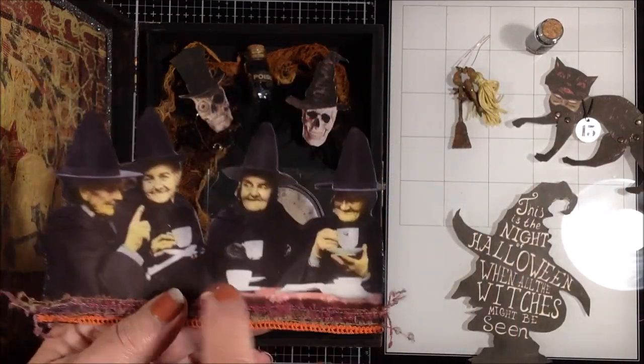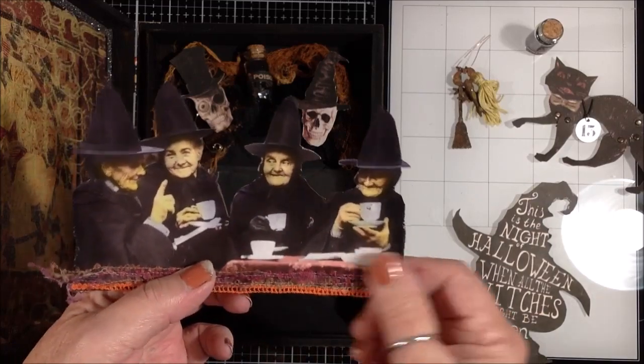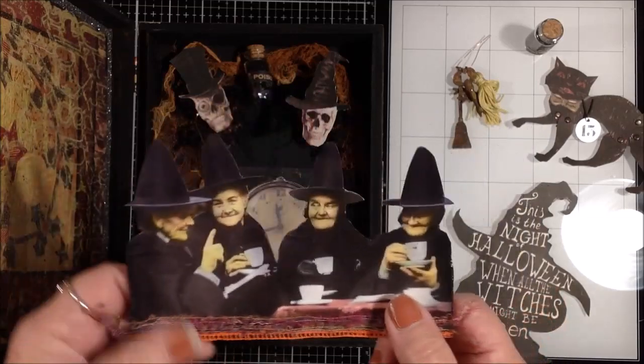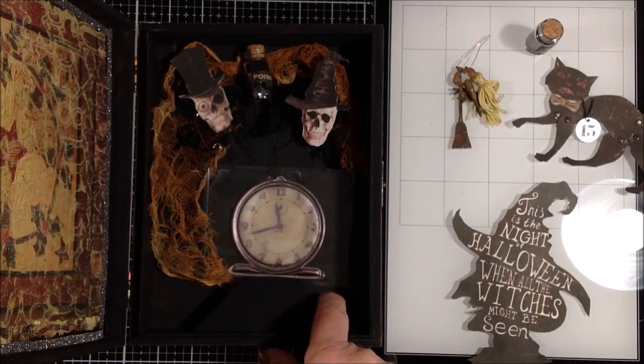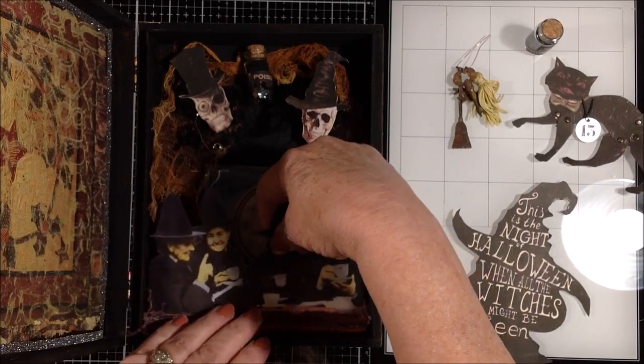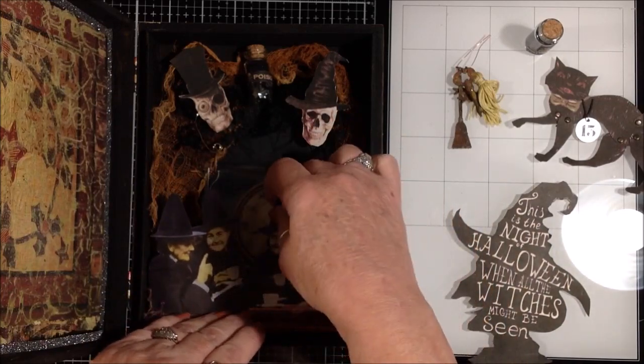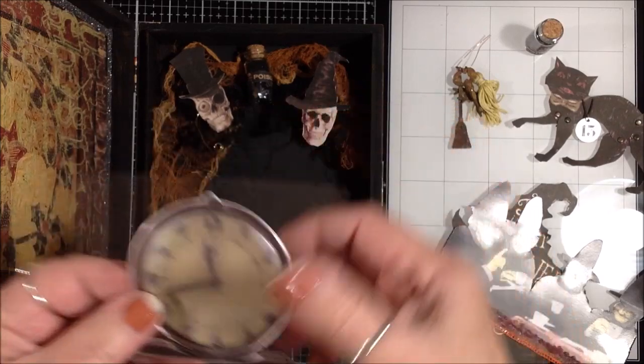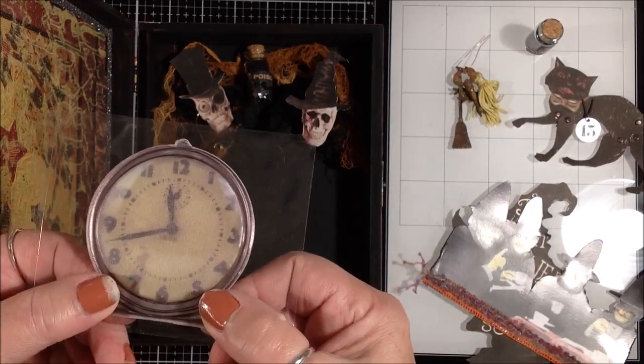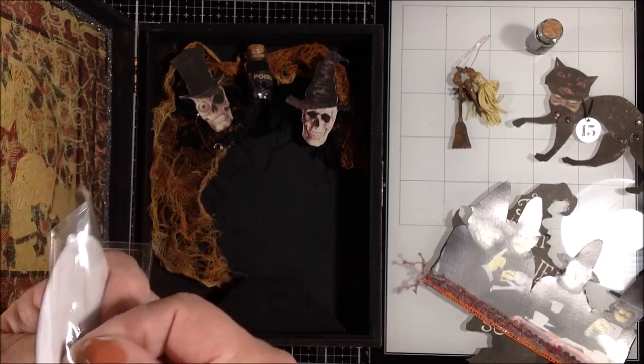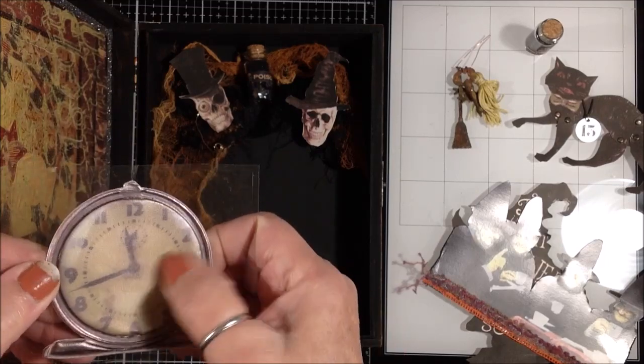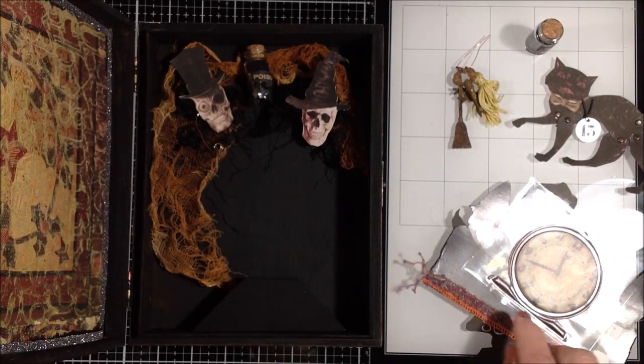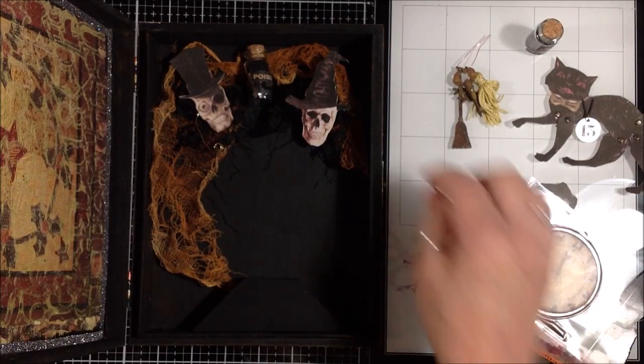I did decide that I'm gonna stand this box up, so it will be up and open. So I took my witch ladies and I fussy cut them out, and then just added a little bit of yarn trim here down at the bottom. I just have a block of wood in here so that they can sit up out of the box.